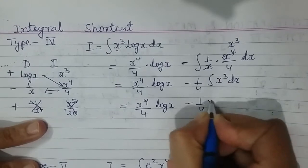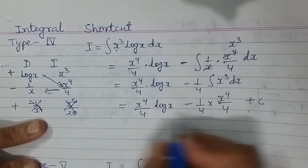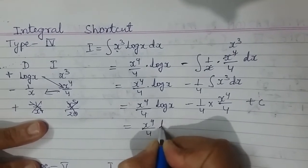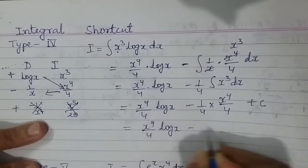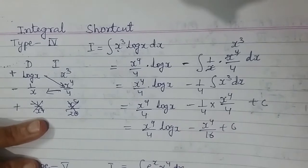And in the next step it will become x power 4 upon 4 log x, and this will become minus 1 upon 4. Integral of x cube is x power 4 upon 4 plus C. So my final answer is x power 4 upon 4 log x minus x power 4 upon 16 plus C. It will save a lot of time in competitive exams.